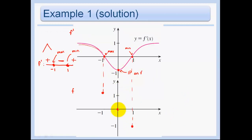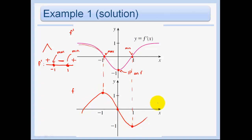We also know that (0, 0) is an inflection point, so the function is changing concavity there. The function was concave downward and then becomes concave upward at 0. So drawing something like that is going to be just fine.